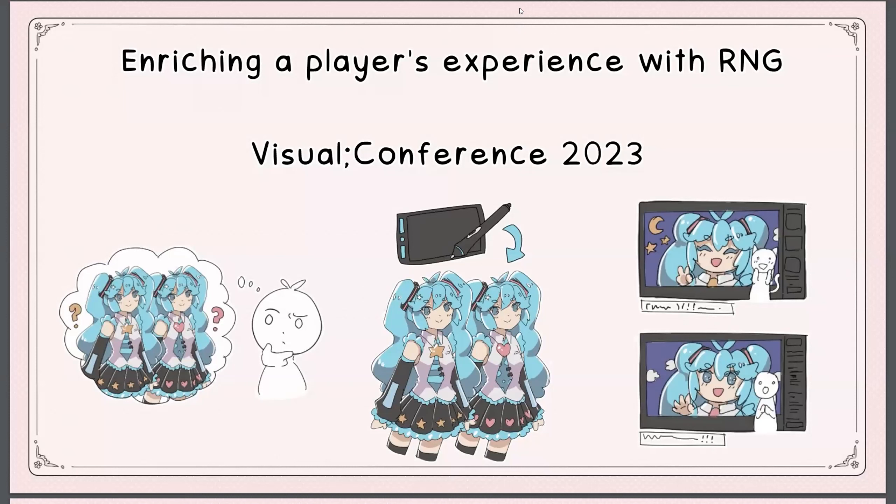The Ren'Py tools to do this — the main one is of course renpy.random. You can take anything from the Python random module and just slap renpy. on the front of it and it'll become compatible with rollback. So it's not just the ones listed here, although it does mention them of course. It took me a while to realize that was actually there, but even the more complex ones work perfectly out of the box.